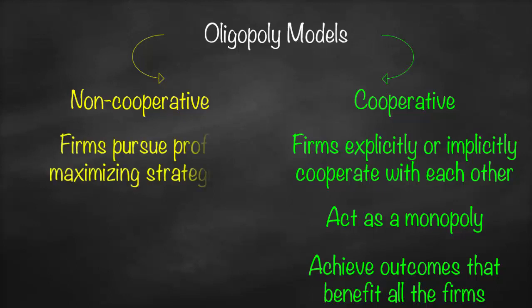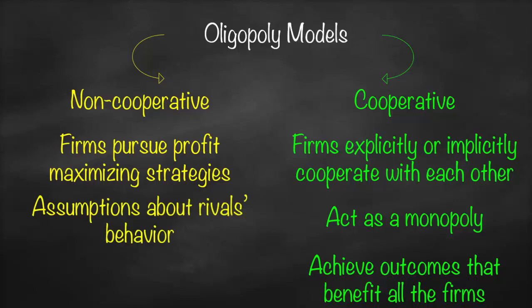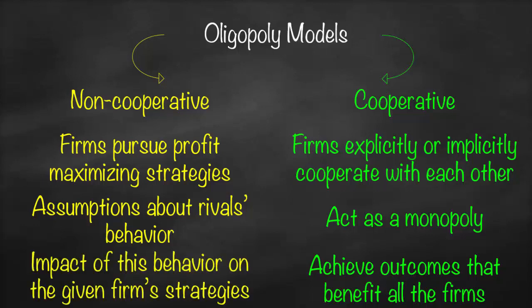For non-cooperative firms, firms would like to pursue profit maximization strategies, but they do not collaborate. Consequently, they need to make some assumptions about their rivals and competitors, and the impact of this behavior on the given firm's strategies. Since this is oligopoly — meaning we have a few firms, between 2 to 10 — you need to analyze the expected strategy of your competitor and then set your strategy accordingly.